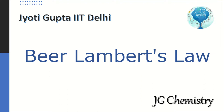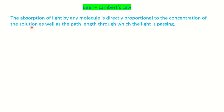So let's start. Beer-Lambert's law states that the absorption of light by any molecule is directly proportional to the concentration as well as the thickness of the medium, or the path length through which the light is passing.